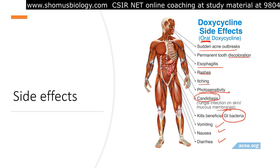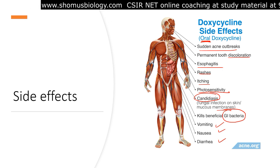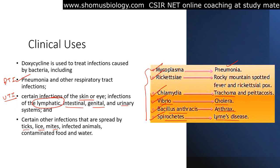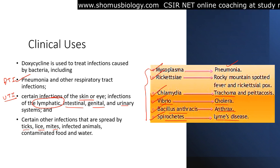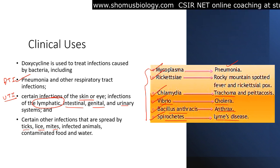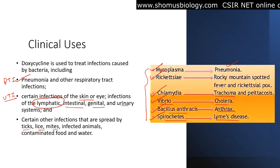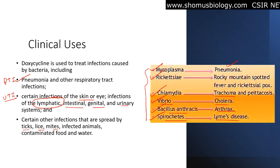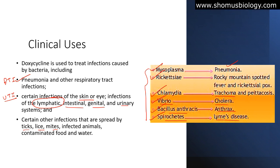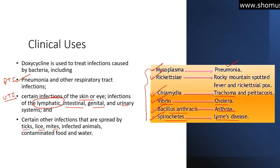Despite its side effects, doxycycline is well tolerated and is a blessing for treating infections by spirochetes, Mycoplasma, Rickettsia, and Chlamydia. These infections are generally not treated well or responded to well by other primary antibiotics, making doxycycline especially valuable against these infective agents.